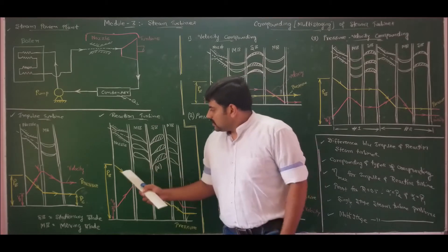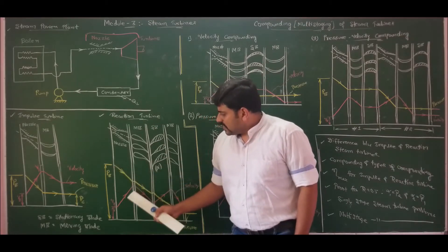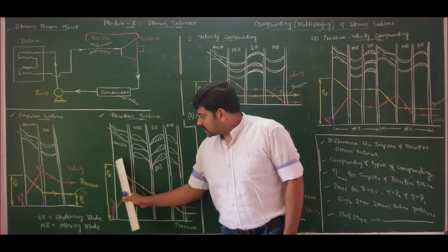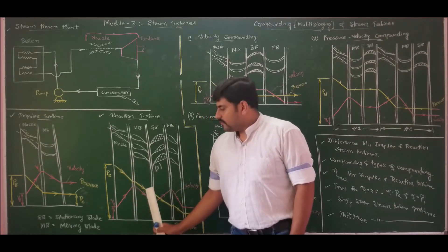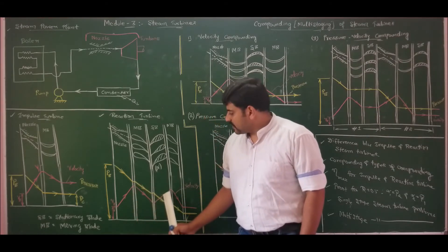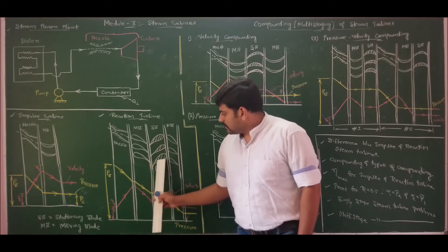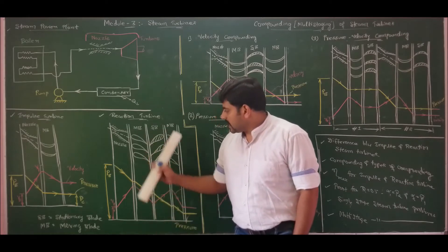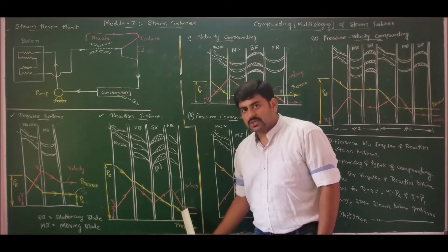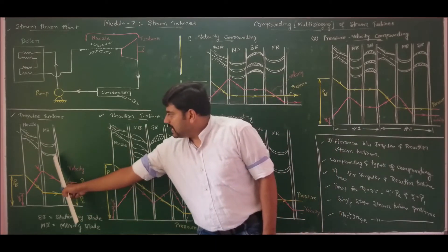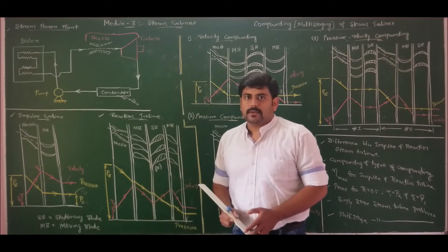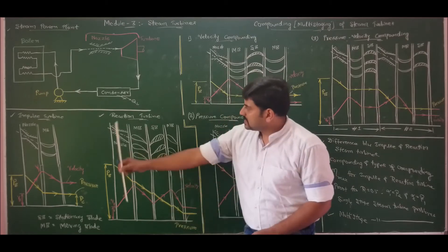In the case of reaction turbine, plotting variation of velocity and pressure over the steam passage length, we observe steam expands partially in the nozzle and remaining expansion takes place in the moving blade. Velocity increases in the nozzle and decreases in the moving blade. In the next stage, the stationary blades act as nozzles — velocity increases and pressure decreases. In the moving blades, both velocity and pressure decrease. The blades are symmetrical in case of impulse turbine, whereas blades are airfoil-shaped in case of reaction turbine.